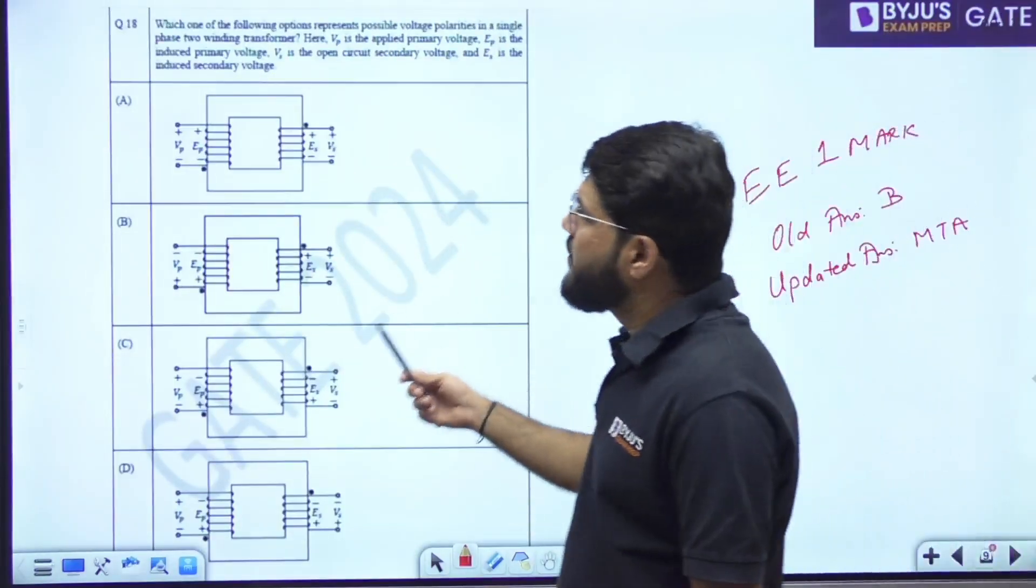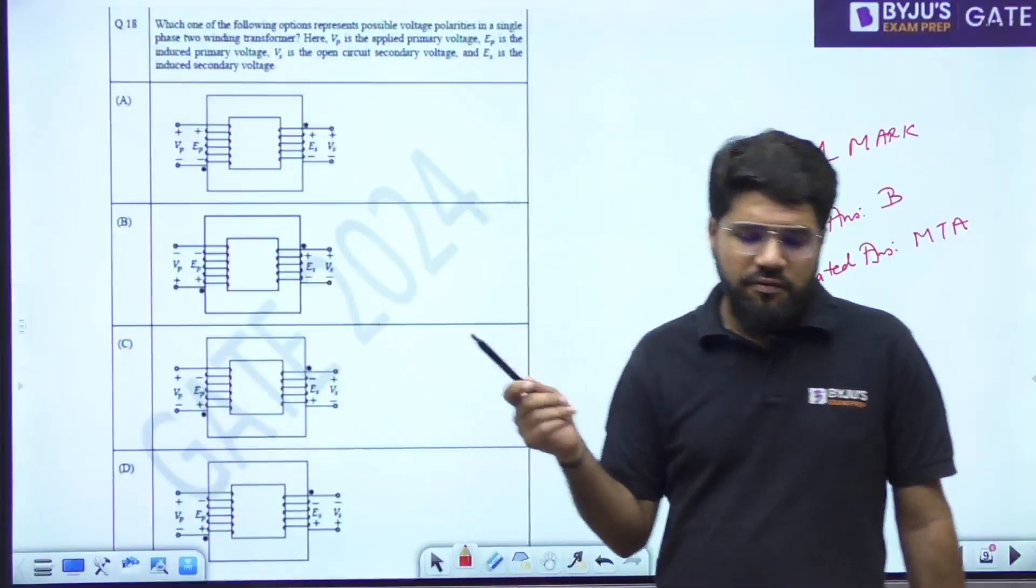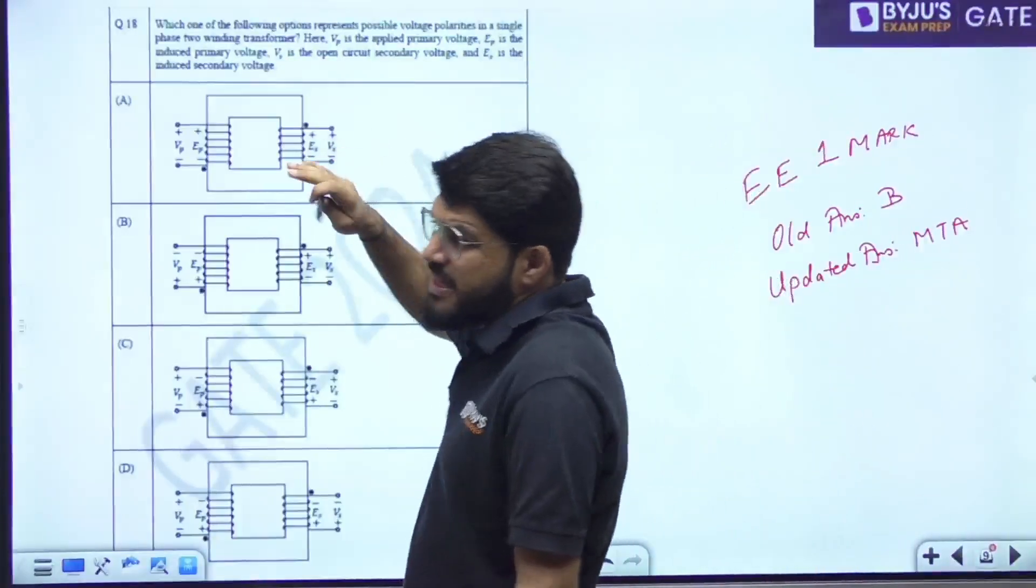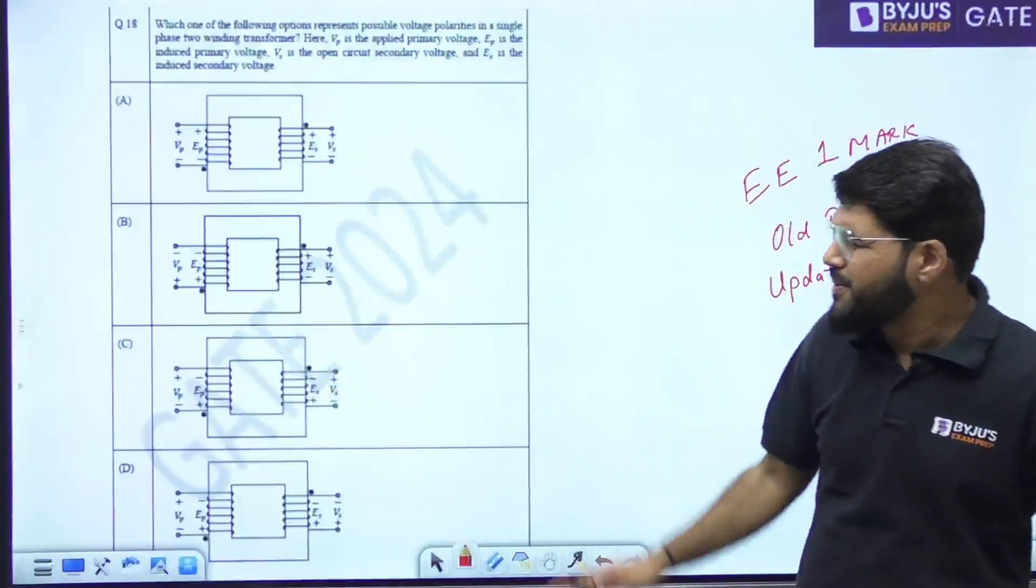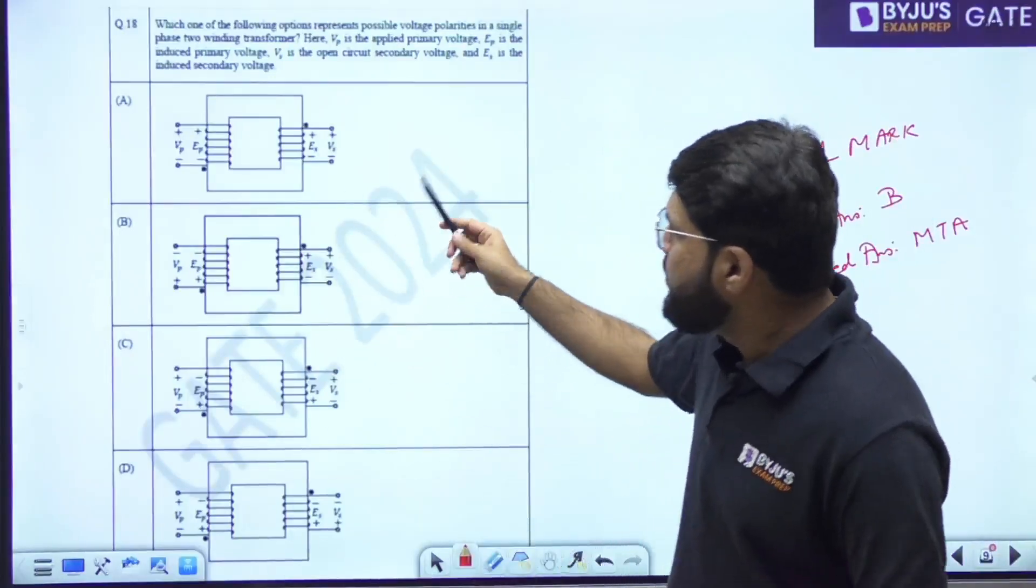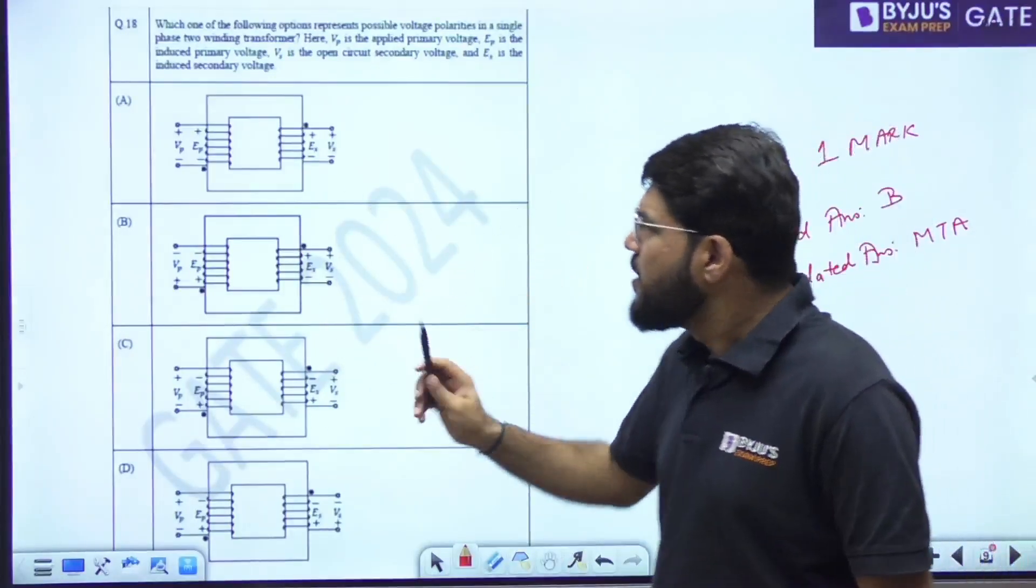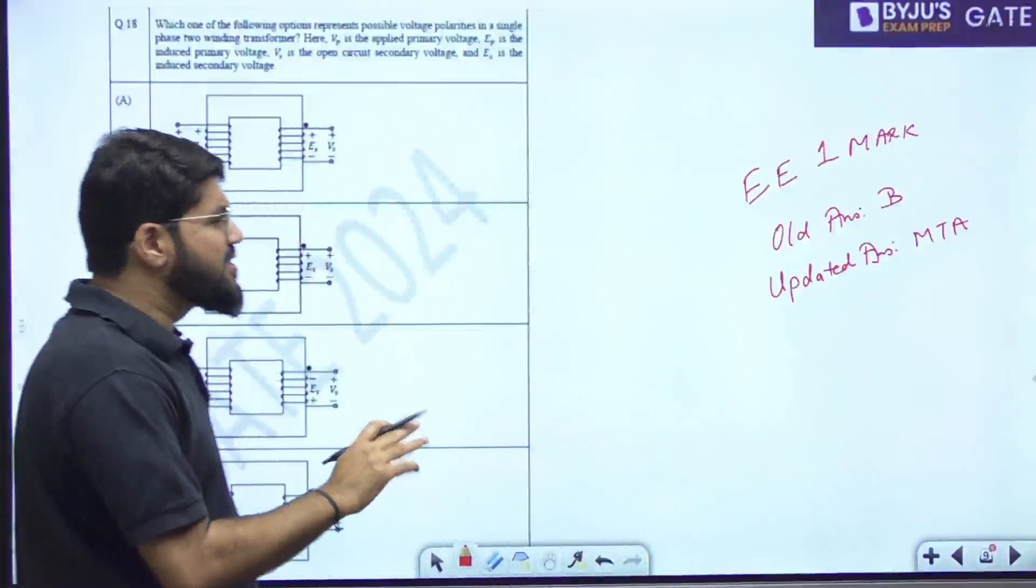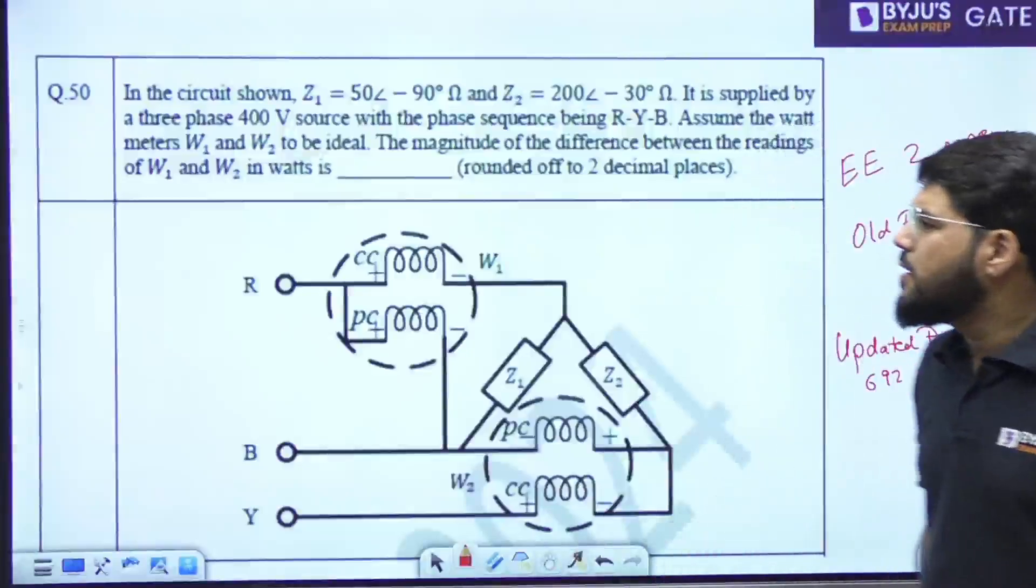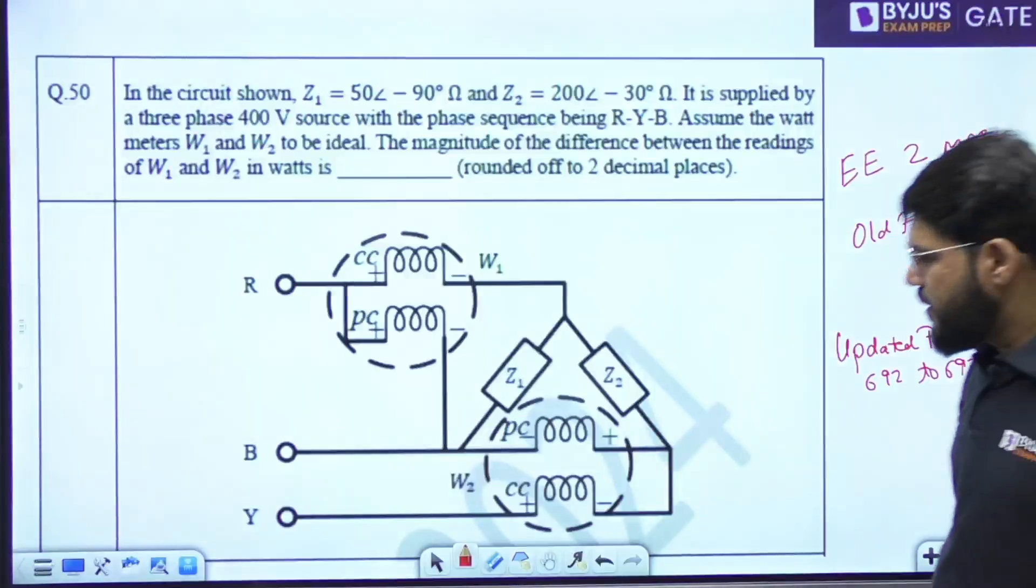Now coming to another double EE one mark question - transformer winding. There is some confusion, wrong data in the question, or there is some. And as far as electrical concerns, electrical experts say - because I'm not really into this field, electrical - kuch polarities ka bhi match ho raha multiple options may. So this was challenged by the student. This has been accepted, and marks to all has been allotted.